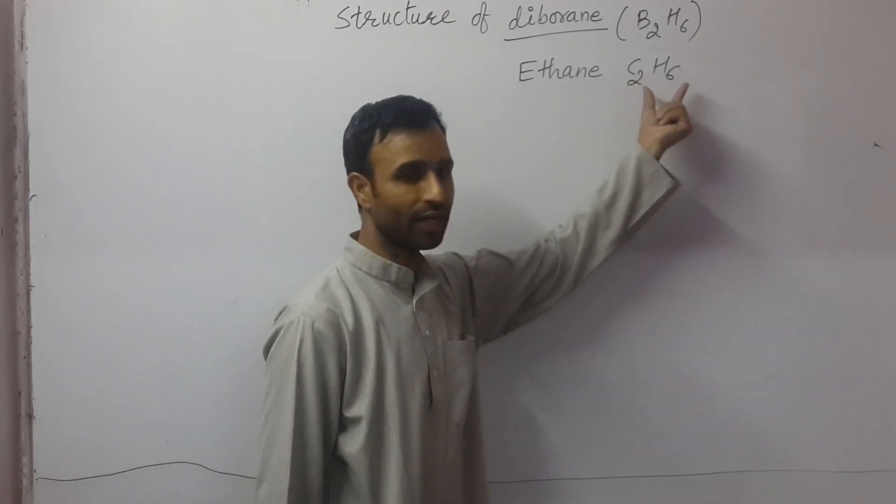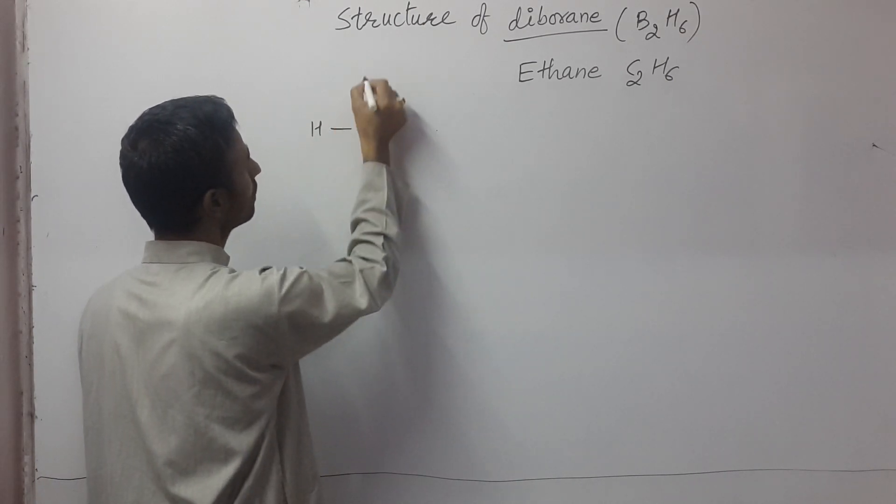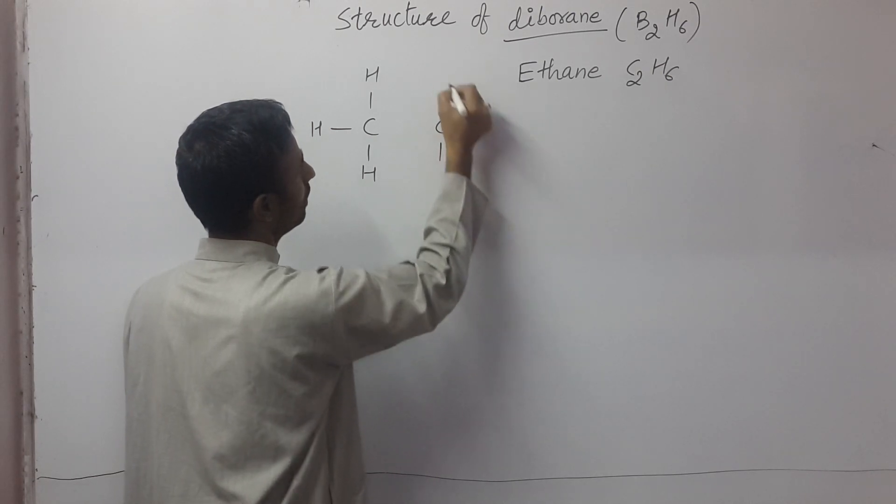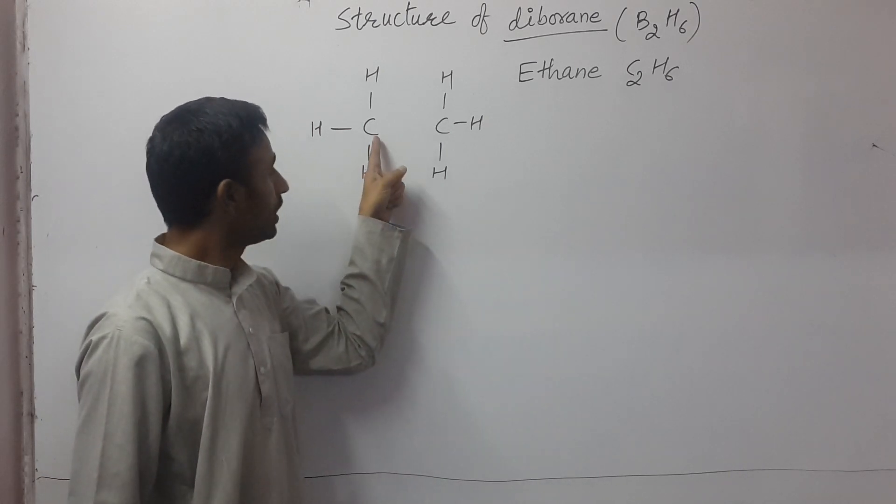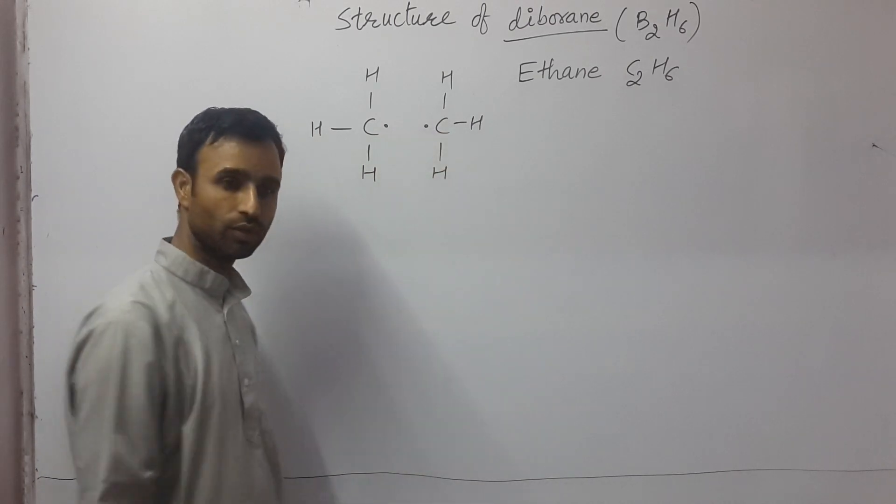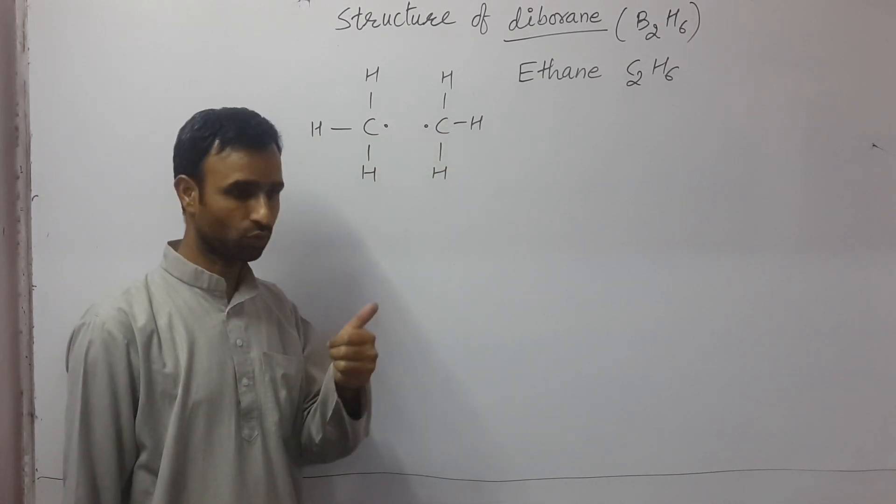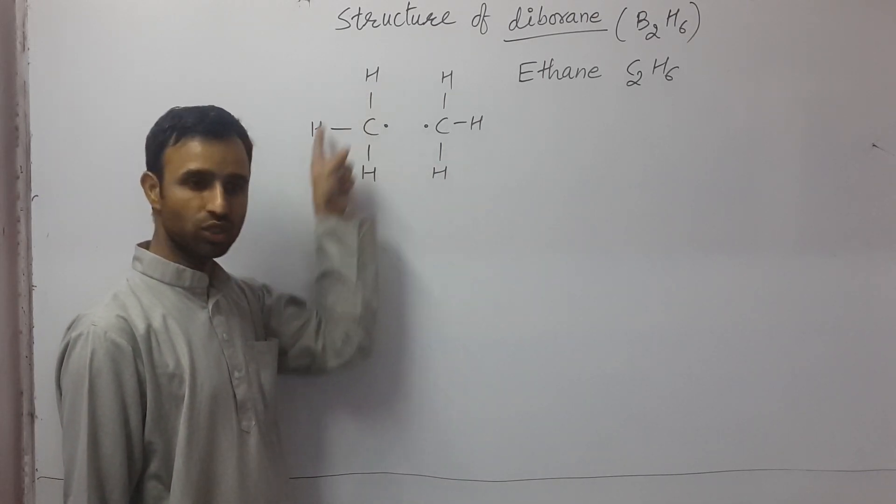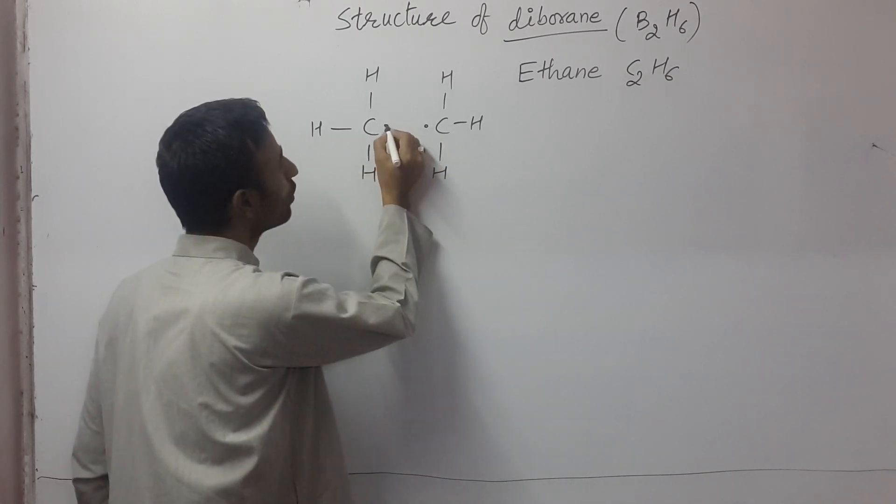But when we talk about ethane, in ethane we have two CH3 units. And these two CH3 units, each carbon is left with one electron. Because carbon has four electrons, so out of four, three are involved in bonding with hydrogens, and each carbon is left with one electron, and that forms a bond with each other.